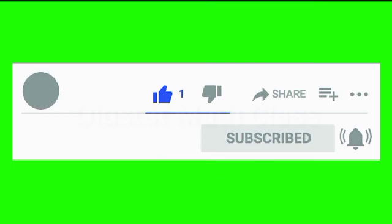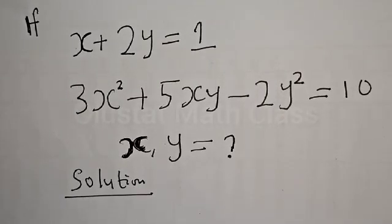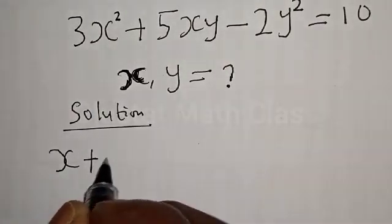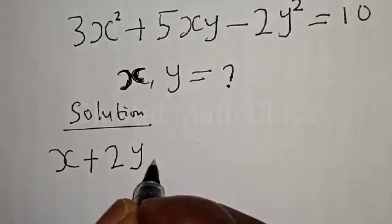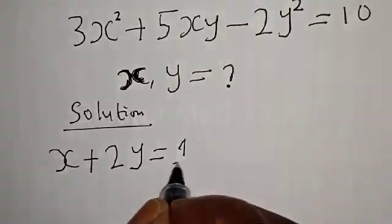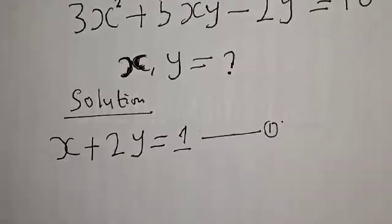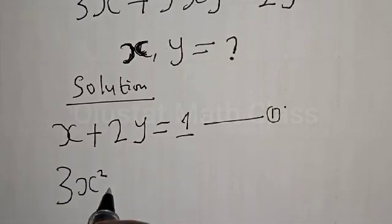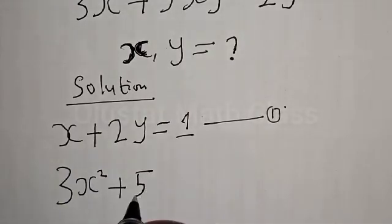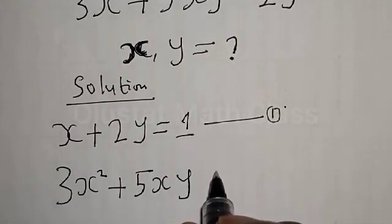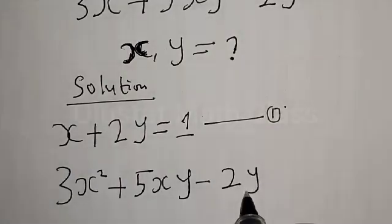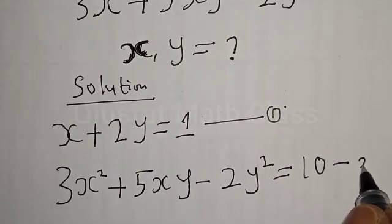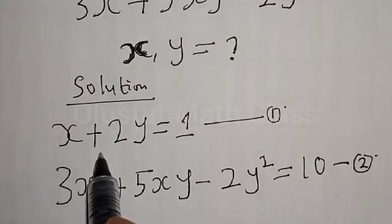Solution: we have s plus 2y is equal to 1 — let's call this equation 1. We also have 3s squared plus 5sy minus 2y squared is equal to 10 — let's call this equation 2.